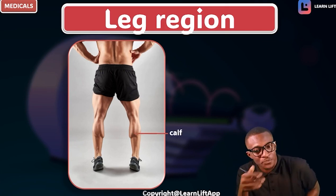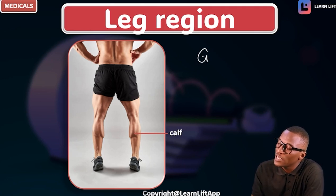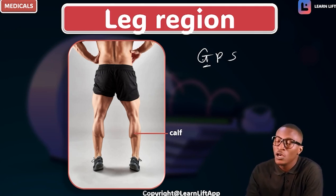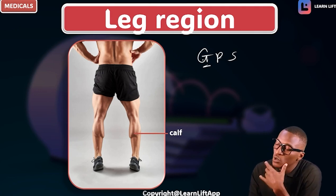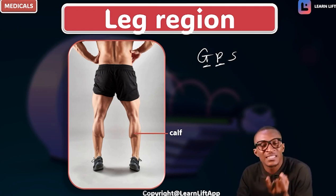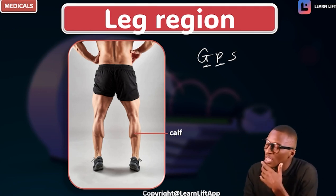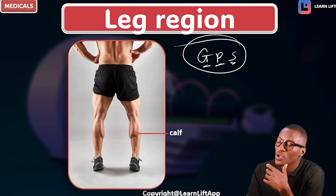The calf is formed by three muscles — I call them the GPS. G is the gastrocnemius muscle, P is the plantaris muscle, and S is the soleus muscle. When we get to muscles, we'll talk about that in more detail.